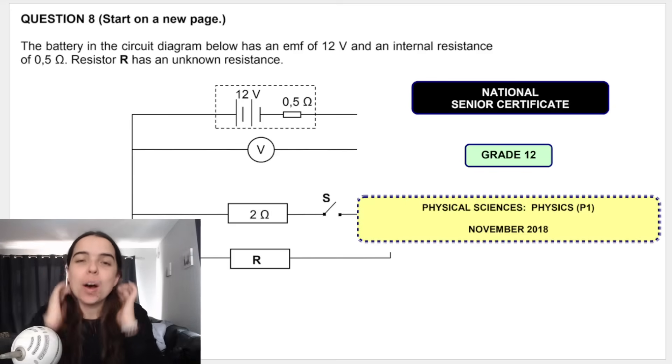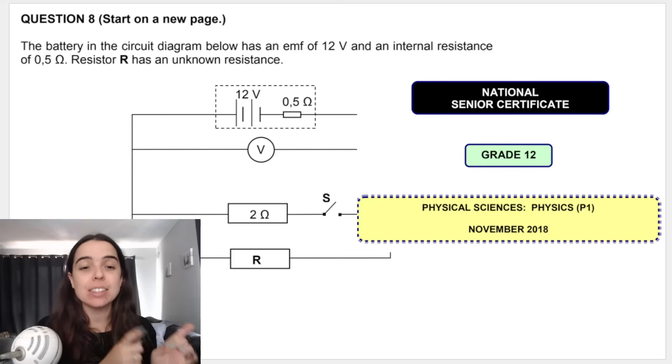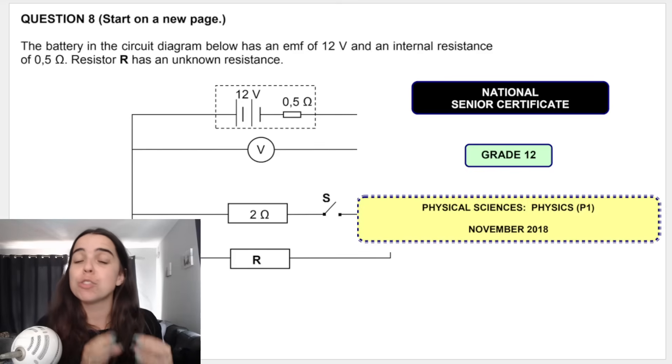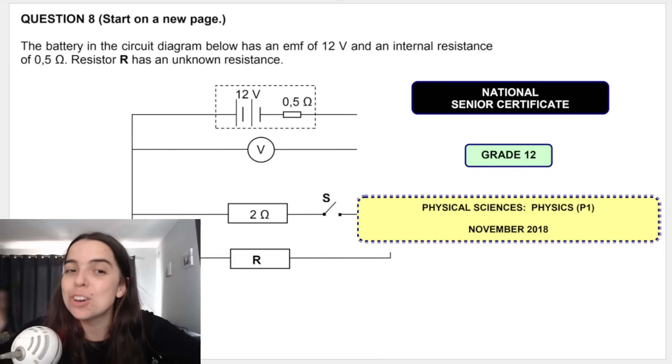Hello grade 11 and 12 physics learners. In today's video we're going to be doing a past paper. It is a grade 12 past paper but grade 11s if you do circuits with internal resistance you can watch this video as well. It is November 2018 the Department of Basic Education's final exam paper. Let's jump right in. But before we do remember to subscribe please for more videos like this. It really means the world when you subscribe to my channel, like my videos, and comment down below what else you want me to help you with.